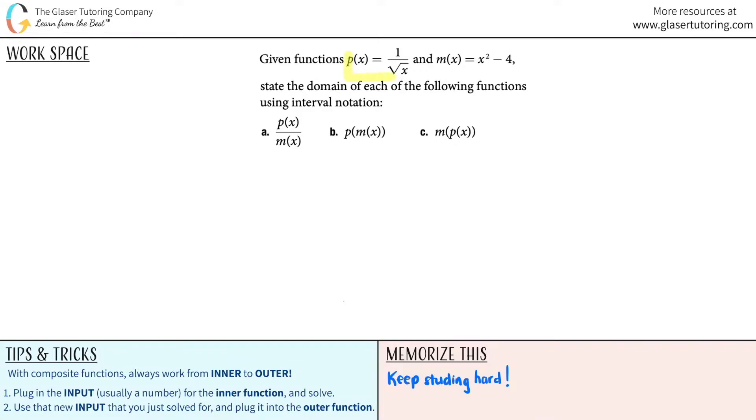Given functions p of x equals 1 divided by the square root of x and m of x equals x squared minus 4, state the domain of each of the following functions using interval notation. And then we have three different functions that we have to figure out.